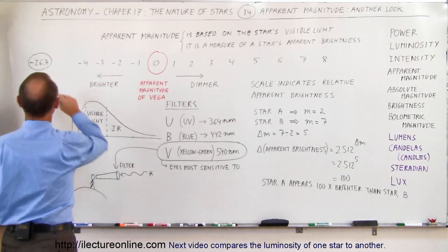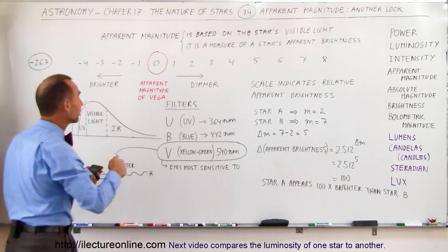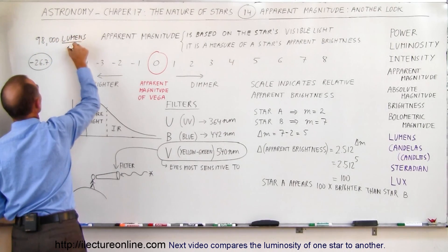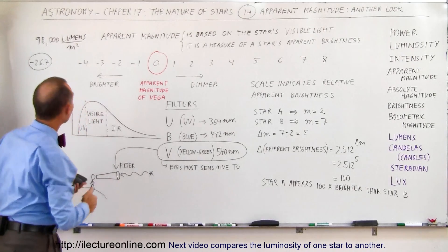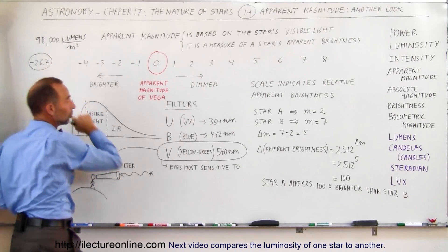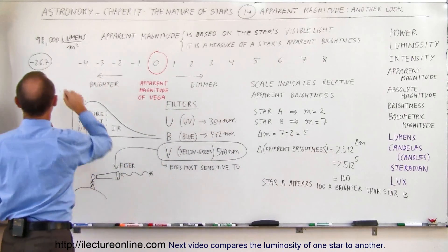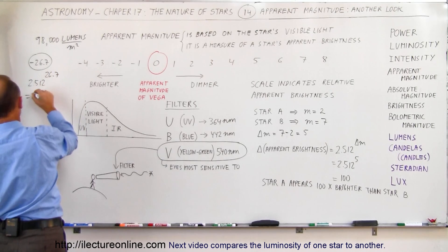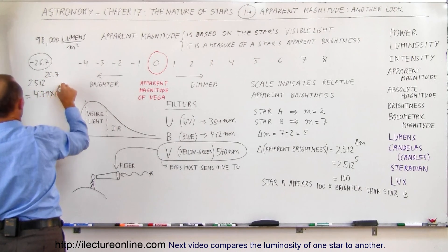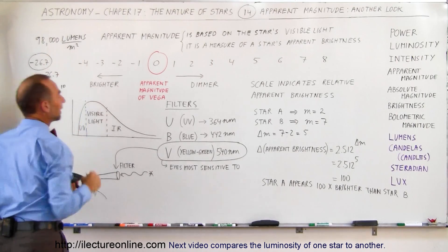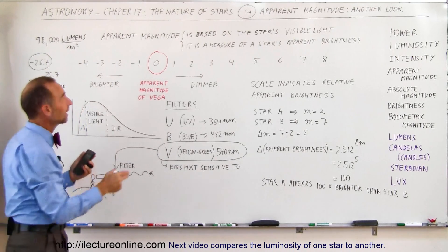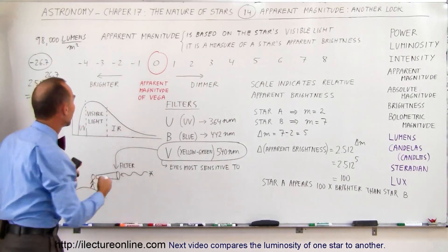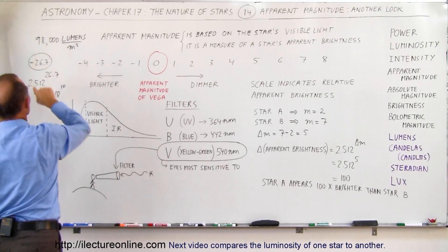And if we also realize that the brightness of the Sun on the Earth is about 98,000 lumens per square meter, then if you divide this number by the difference in magnitude used as an exponent over here, for example, we take 2.512 and raise it to 26.7 power, we get something like 4.79 times 10 to the 10th. If you now divide this number into that, that tells us that an object that has zero magnitude, like Vega,